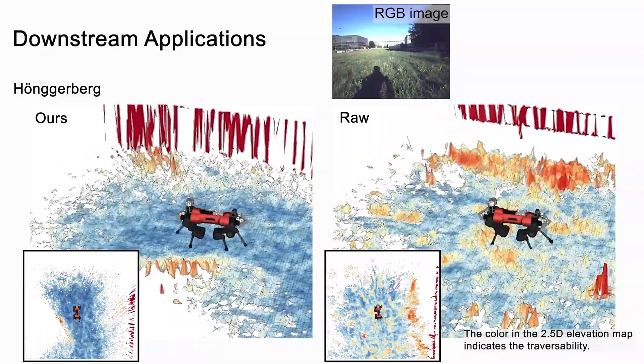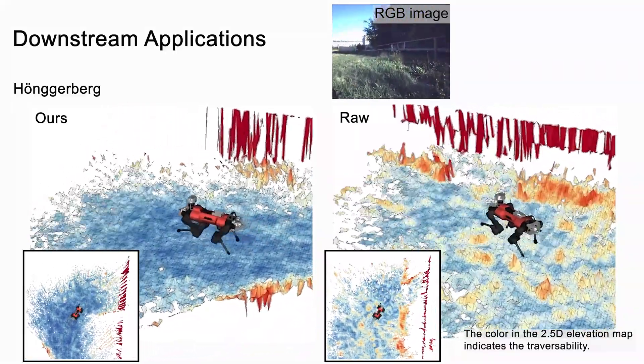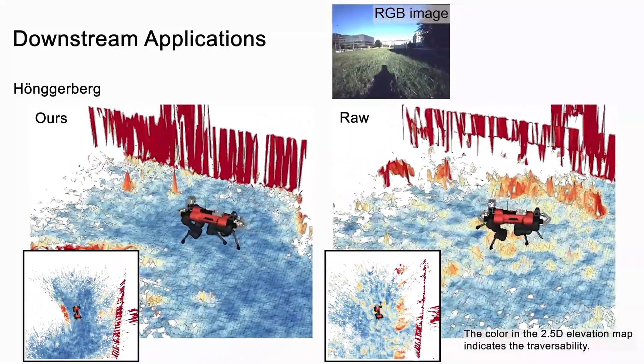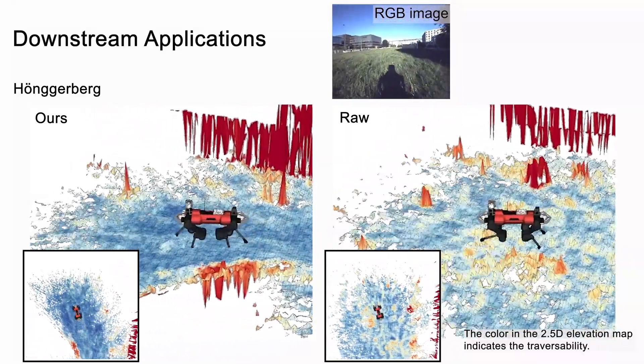For now, our model is still trained with a hand-labeled data set for semantic segmentation. It is promising to use zero-shot methods like segment anything to improve the efficiency of data collection.